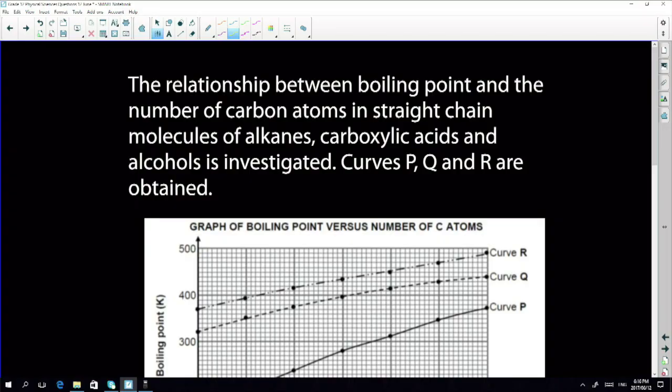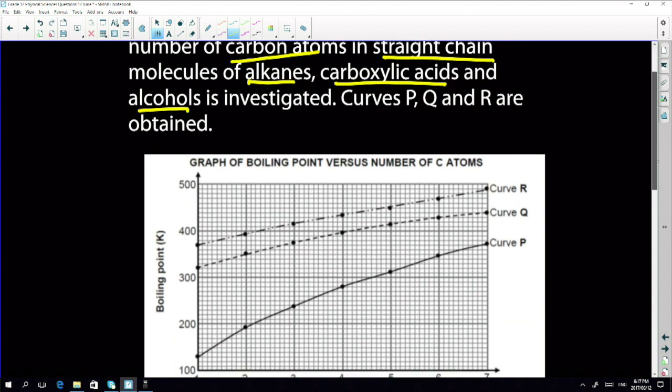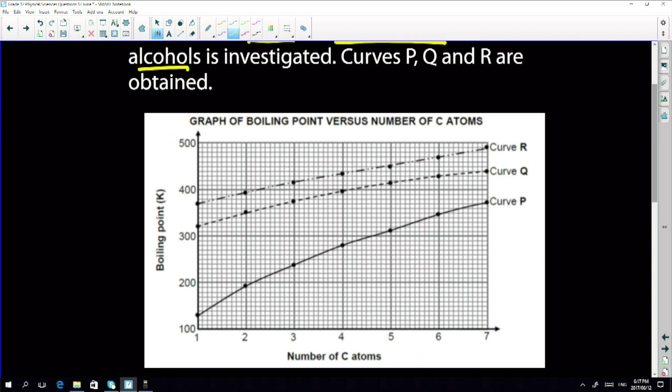So this is such a nice question. The relationship between boiling point and the number of carbon atoms, so there's an important thing - boiling point, carbon atoms in a straight chain molecule of an alkane, carboxylic acid, and an alcohol is investigated. Three curves, curves P, Q, and R are obtained. Now, before I look at anything else, when we have a boiling point question, I know they're going to refer to intermolecular forces.